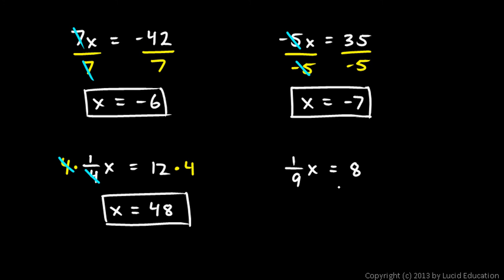And the same approach works on this one. 1 ninth times x equals 8. So I multiply by 9 on both sides. And on the left, the 9's cancel. And I'm left with x equals 8 times 9, which is 72. And in every one of these examples, we used this fundamental concept of algebra. And that is, whatever you do on one side, you do on the other.